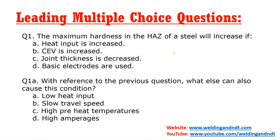In Theory Part 1, the first question format is the leading type. Two questions will be interrelated — for example, Question 1 and Question 1a. A question like 'maximum hardness in HAZ of steel will increase if' has four answer options. The second question, 1a, refers back to it: 'with reference to the previous question, what else can also cause this condition — the increase in hardness in steel?' So one question and one supplementary interrelated question.